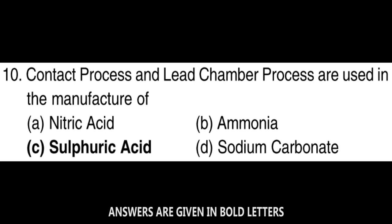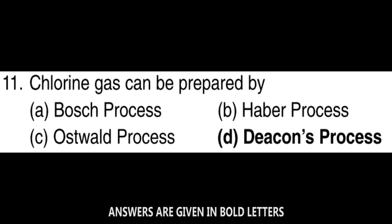Next question: Contact process and lead chamber process are used in the manufacture of sulphuric acid. Next question: Chlorine gas can be prepared by Deacon's process.